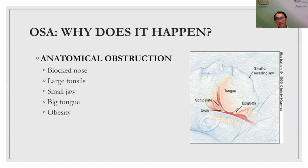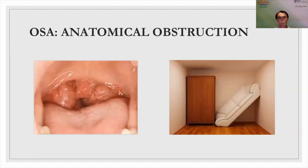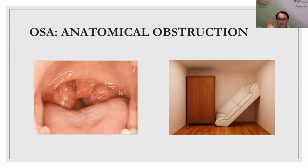In anatomical obstruction, a patient could have a blocked nose, large tonsils, a small jaw, a big tongue, or be obese. When obese, fat is deposited in the tongue and side walls of the throat, exerting inward pressure when you lie down. Here in the photo, on the left, is a patient with very large 'kissing tonsils' that touch one another, obstructing airflow from the nose down into the throat.